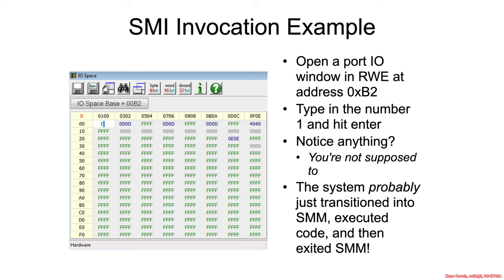I want to make a point about how SMIs and SMM can be invoked behind the scenes and you wouldn't actually see it. After this video I'm going to have you do a basic experiment using either Read Write Everything or ChipSec — I'm going to want you to write to port B2, just write some number there like one or whatever. Assuming your system has the relevant enable enabled, it should transition to SMM and then immediately come back. You wouldn't actually notice anything. This is supposed to all happen behind the scenes quietly, quickly, invisibly in a way that ideally doesn't perturb the running operating system.